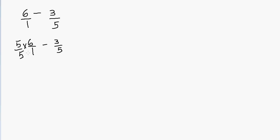Now it's just simple multiplication of fractions. We multiply the numerators and then the denominators. 5 times 6 gives me 30, and 5 times 1 gives me 5. So I have 30 over 5. Then I have the subtraction sign in between and I have 3 fifths, which I'm not going to change. Now I have the same denominators. When you have the same denominators it's really easy to subtract — you just subtract the numerators. 30 minus 3 gives me 27. You never add or subtract the denominators, so the denominator remains 5. The answer is 27 over 5.